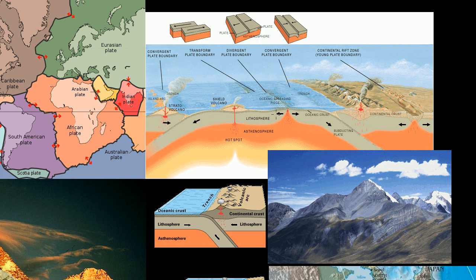We've already talked a lot about plate boundaries where new crust material is being created and the plates are actually moving apart. We call these divergent boundaries. The example we showed of this was the mid-Atlantic ridge, where essentially new crustal material is being created.